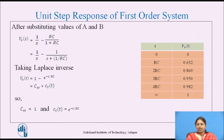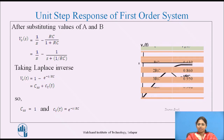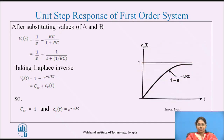This table shows the output response for different values of t. For t = 0, the output response equals 0. For t = RC, the output is 0.632. For t → ∞, the output is 1. Plotting this response, we get a purely exponential curve. The transients are vanishing because the exponential term contains a negative index, which is because the pole has a negative part.